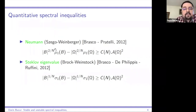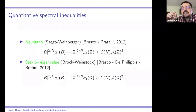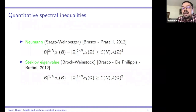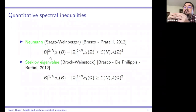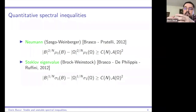Both Neumann and Steklov results are maximization problems, and both are in the spirit of Fusco-Maggi-Pratelli. These problems are very different from minimization eigenvalue problems because in maximization it is roughly enough to take test functions from the eigenfunctions on the ball and transplant them onto omega.